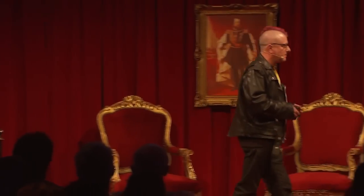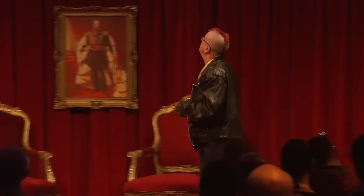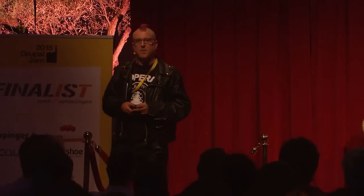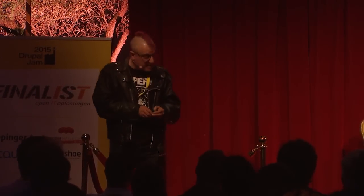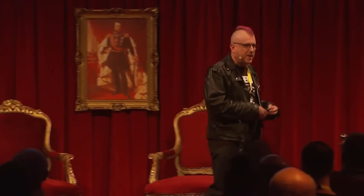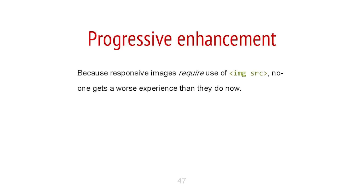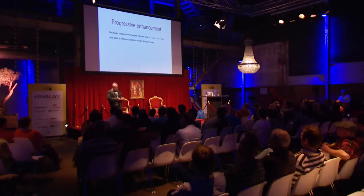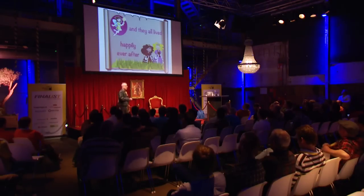The Guardian has been using native responsive images for six weeks with no problems — they get 560 million page views a month. You can use this now, because responsive images require image src, so nobody gets a worse experience and people with modern browsers get a better experience. Your website downloads faster, people buy more stuff, and we all live happily ever after.